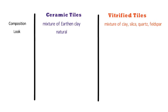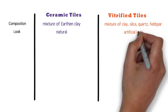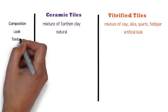Number three is texture. Ceramic tiles are comparatively rough and an external glaze is applied for a glossy look. Vitrified tiles are smooth and glossy, giving an aesthetic look, and they are easy to clean.